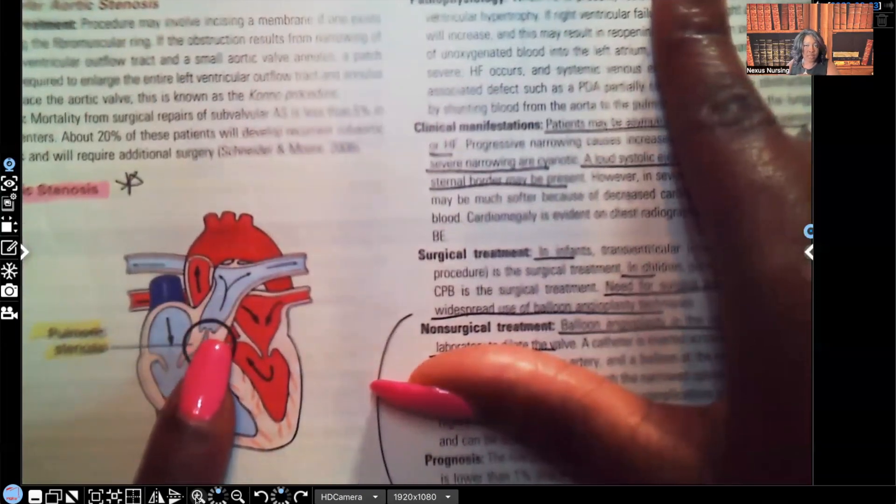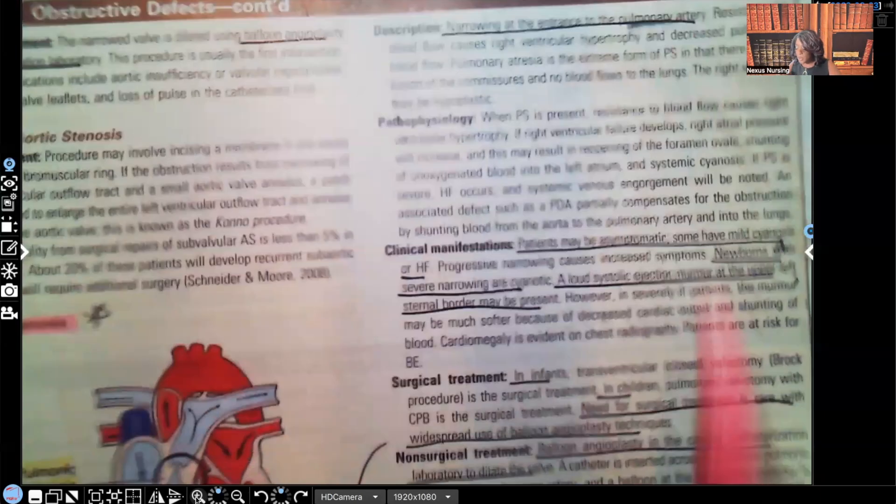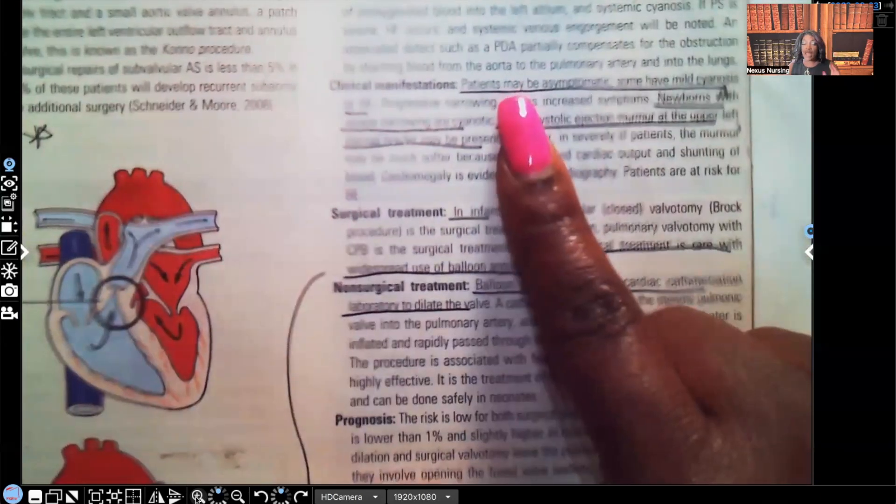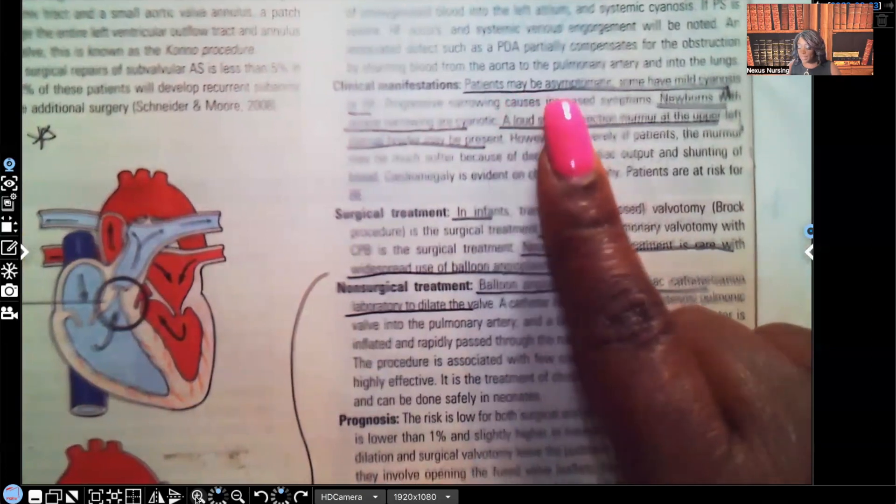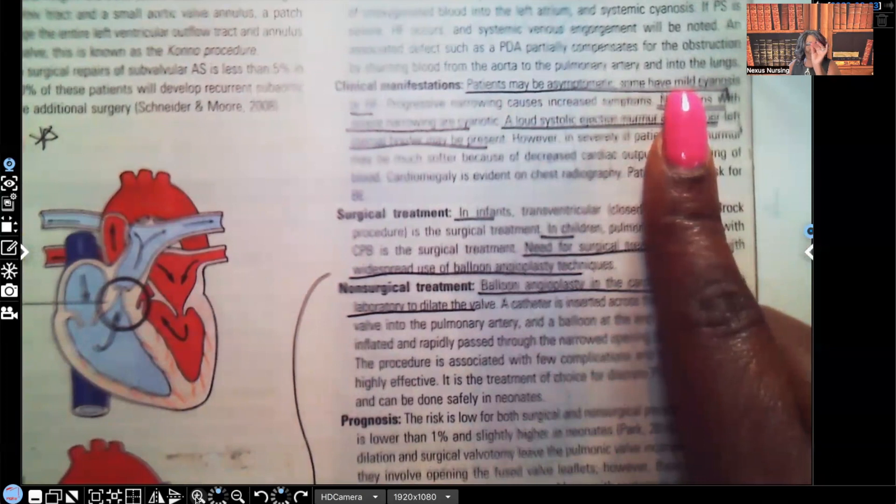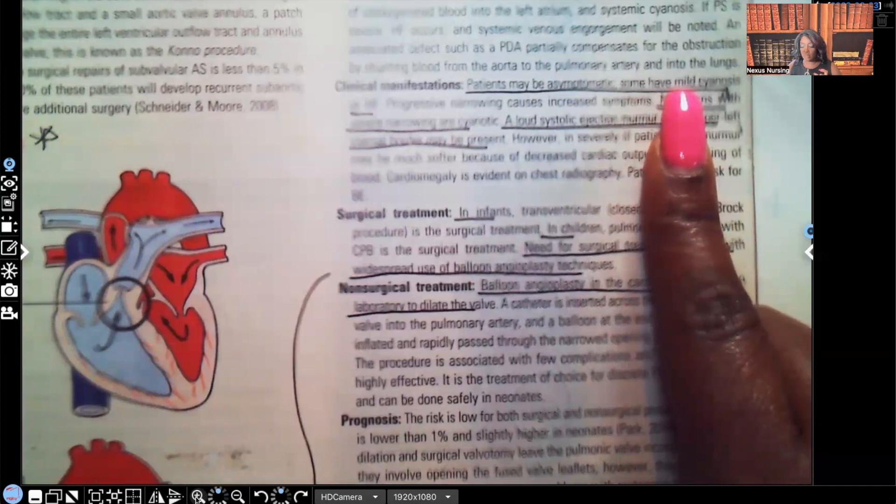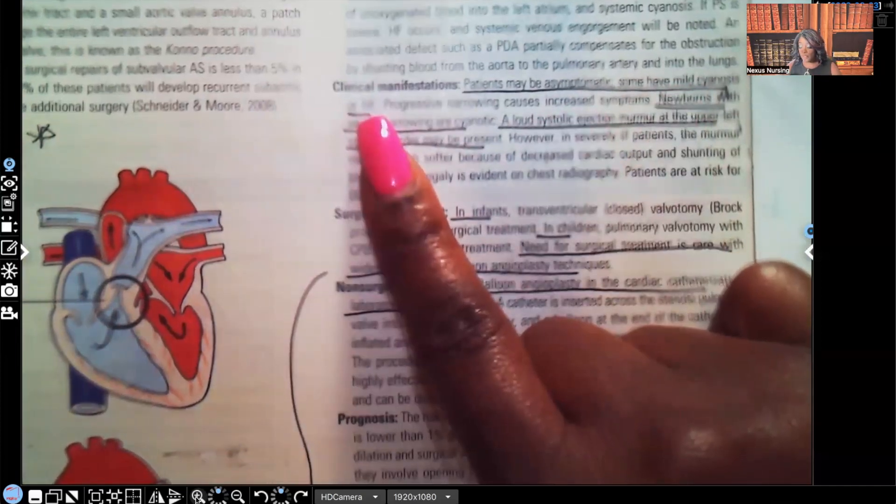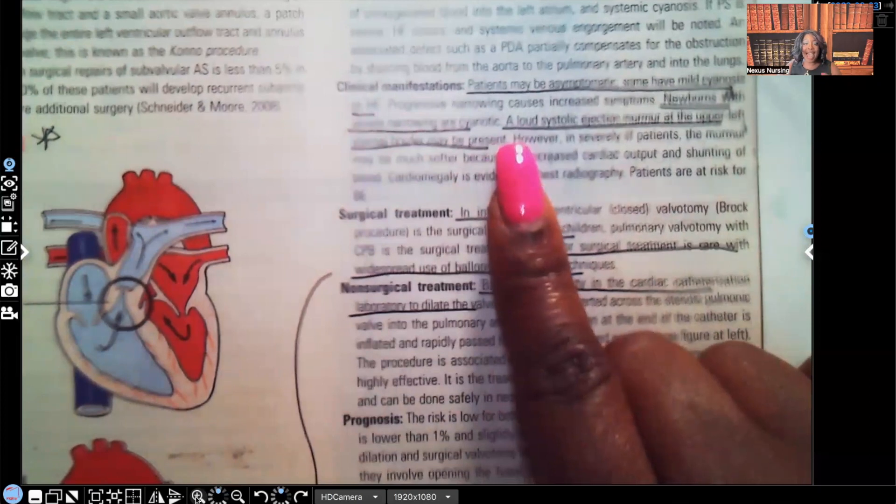What will the patient look like? They may be asymptomatic. Some may have mild cyanosis—just a little bit of a bluish tint, not enough to call this a cyanotic congenital disorder. Or we can see signs and symptoms of heart failure.